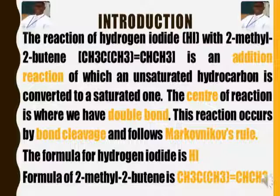The formula for hydrogen iodide is HI, while the formula for 2-methylbut-2-ene is CH₃C(CH₃)=CHCH₃. All reaction mechanisms follow the same pattern — the same basis. Watch my video on the basis of reaction mechanism to understand this better. The reaction starts with bond cleavage.